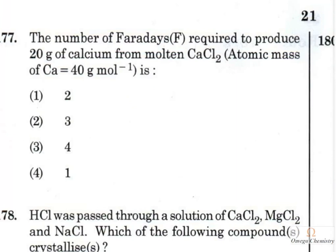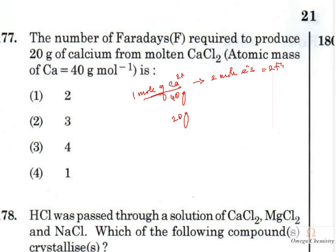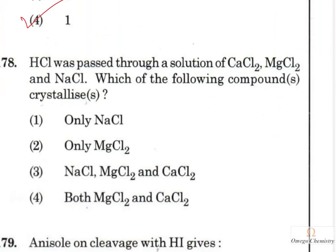Question 160: The number of Faradays required to produce 20 grams of calcium from molten calcium chloride. Calcium is a divalent ion, so 1 mole (40 g) requires 2 moles of electrons = 2 Faradays. For 20 grams (half a mole), only 1 mole of electrons = 1 Faraday is required. Option 1 is the right answer.